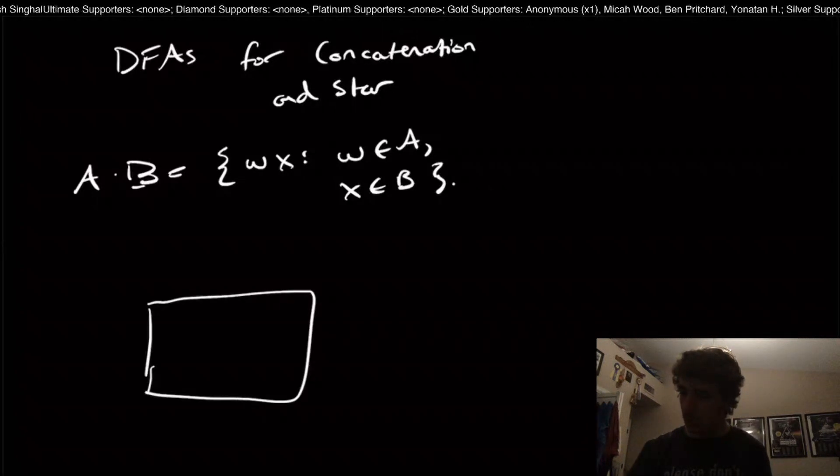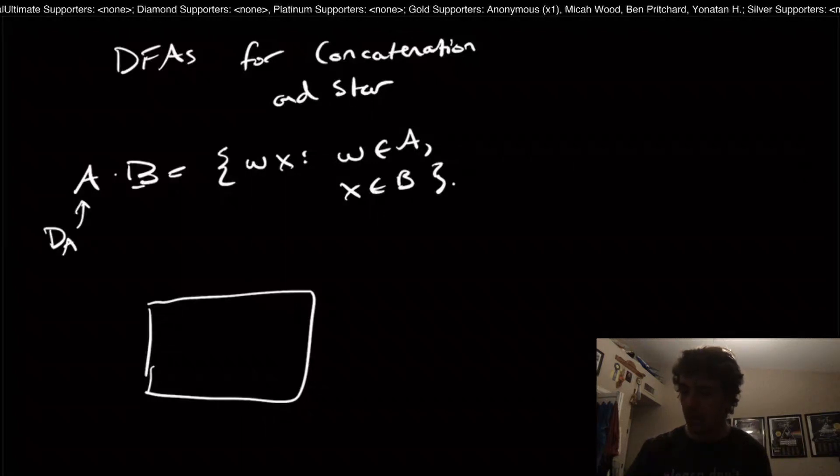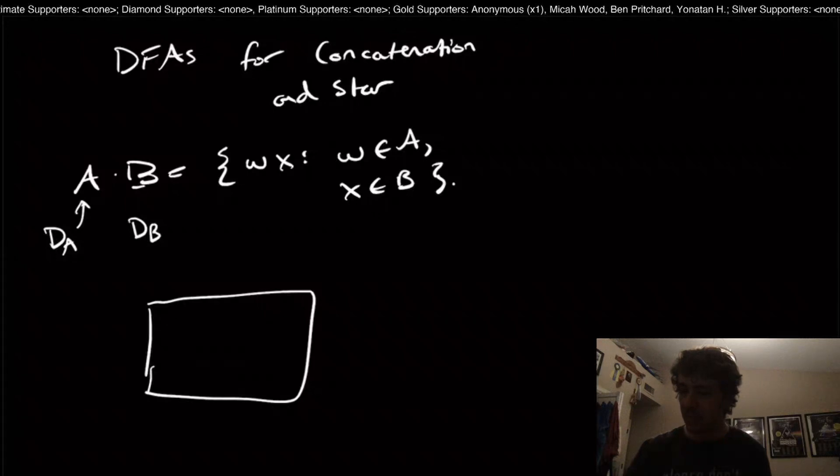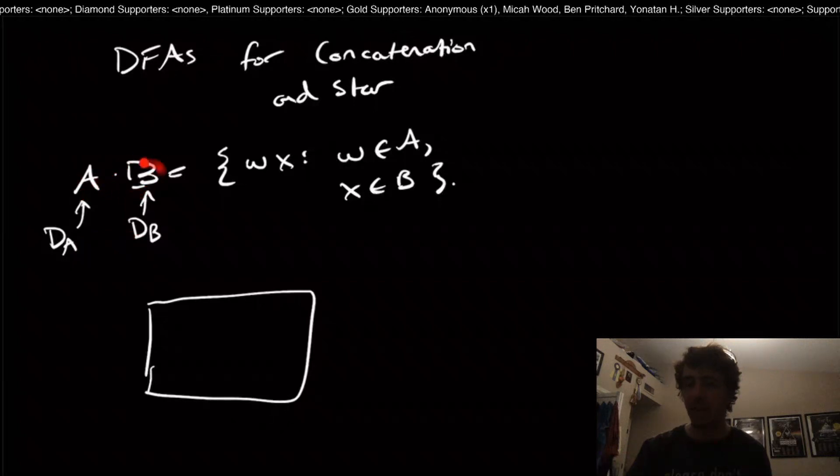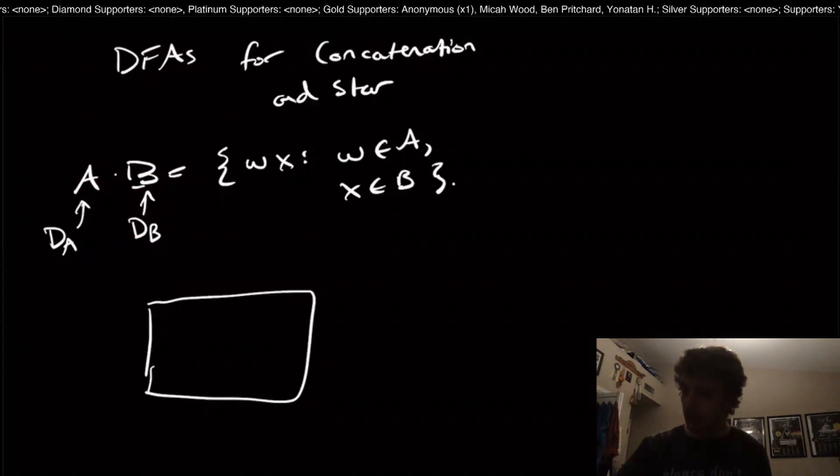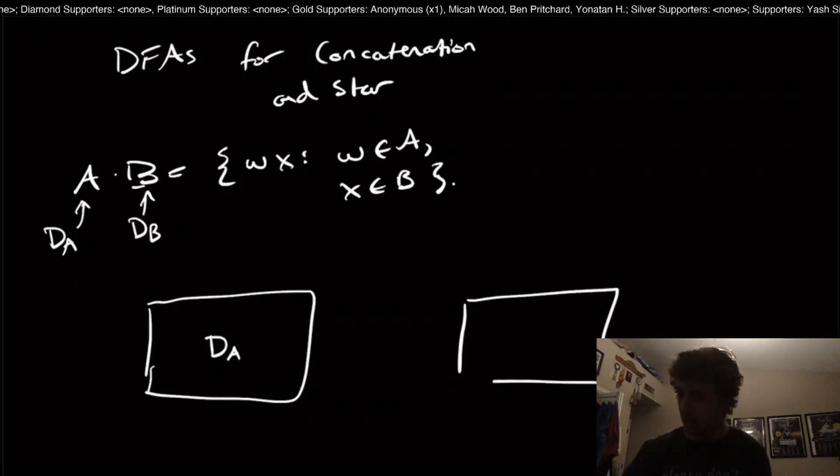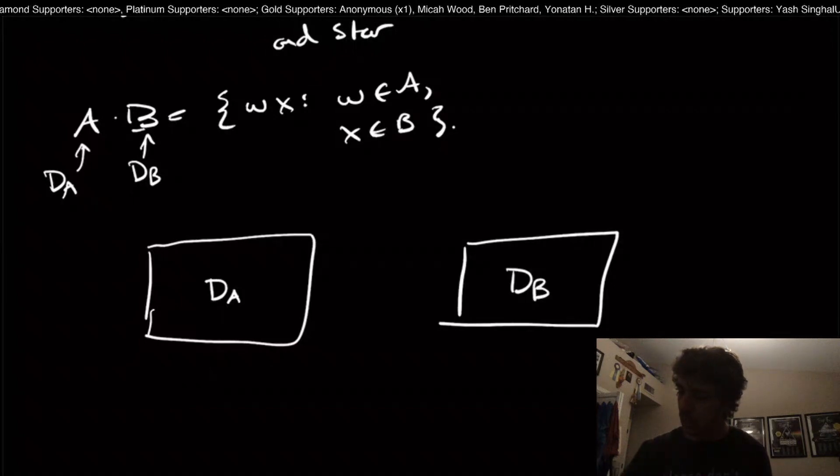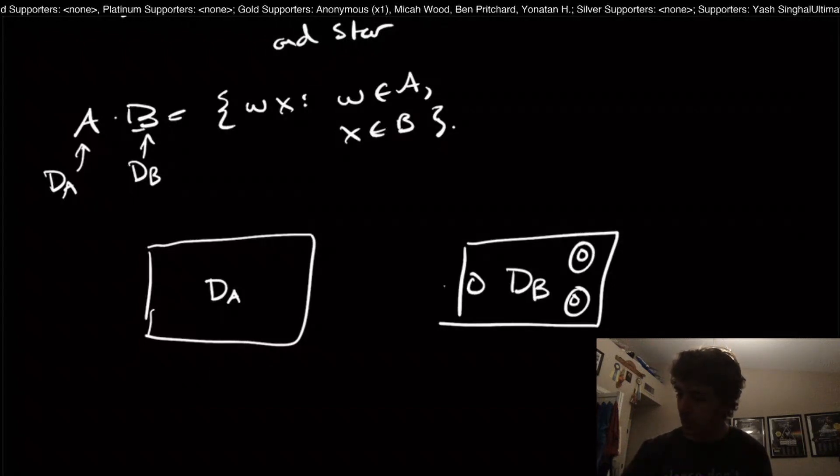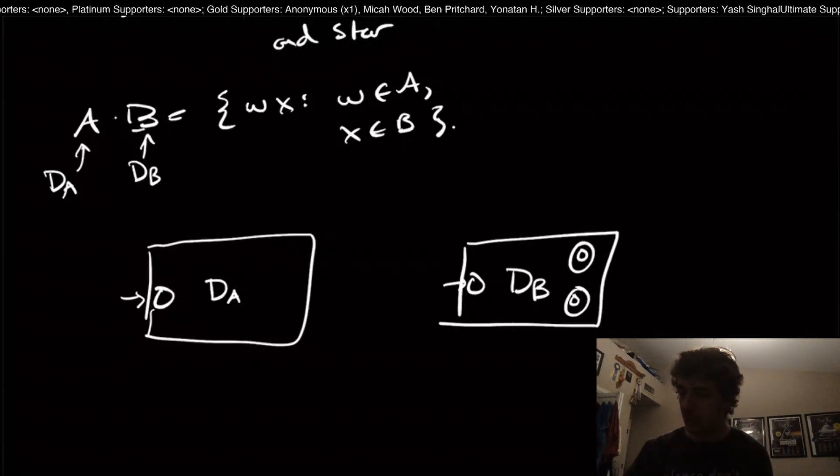Let's imagine the scenario that we've had before. We have a DFA D sub A for the language A and a DFA D sub B for B. These are the DFAs corresponding to these regular languages. This is D sub A and here is D sub B. D sub B has some final states and a start state; D sub A also has a start state and maybe some final states.